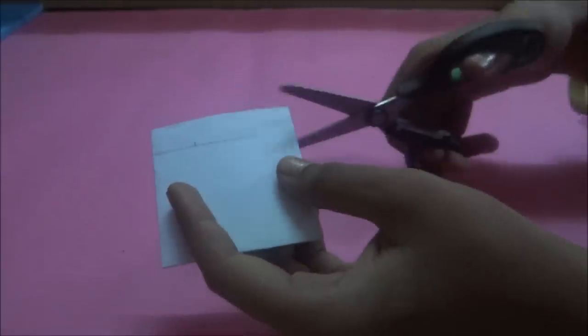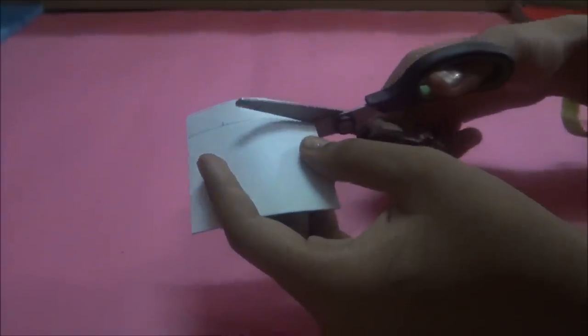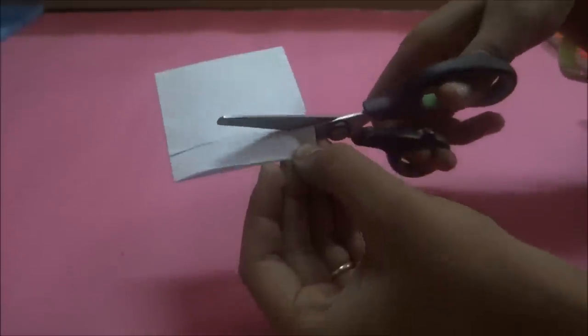About half an inch from the top of the envelope, what you are going to do is cut one third of the width from both sides. So I have two slits here.